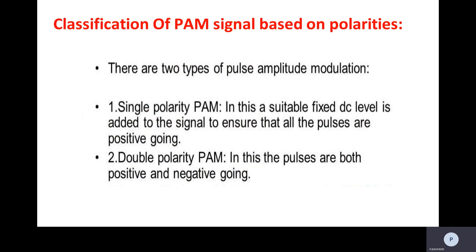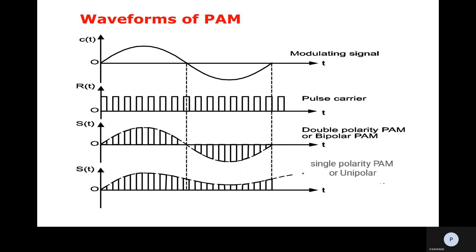PAM is classified into two types: single polarity and double polarity. Single polarity means only positive-going pulses are present. If pulses are both positive and negative going, it is called double polarity. Observing the waveforms: the first is the modulating signal, the second is the pulsed carrier, the third waveform has both positive and negative pulses — that is double polarity PAM — and the fourth waveform has only positive polarity, which is single polarity PAM, also called unipolar.